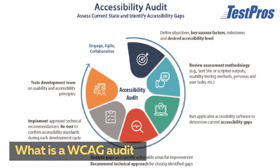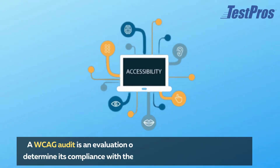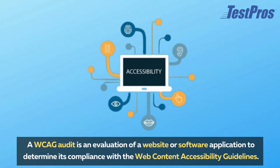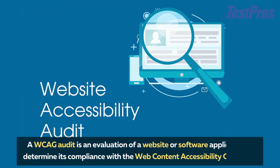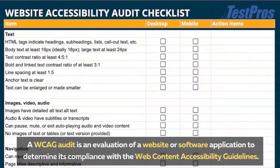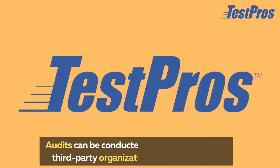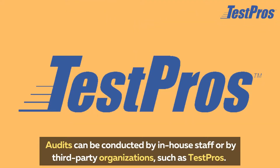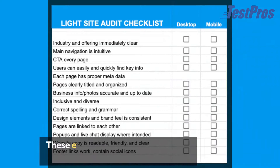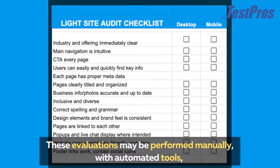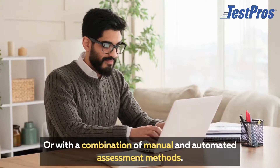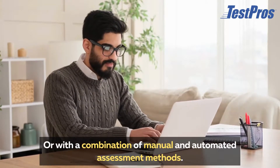What is a WCAG audit? A WCAG audit is an evaluation of a website or software application to determine its compliance with the Web Content Accessibility Guidelines. Audits can be conducted by in-house staff or by third-party organizations such as Test Pros. These evaluations may be performed manually, with automated tools, or with a combination of manual and automated assessment methods.